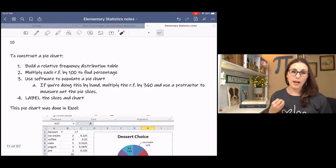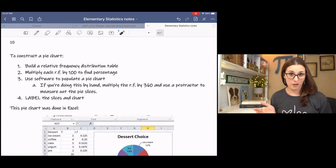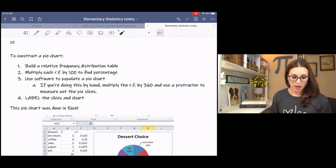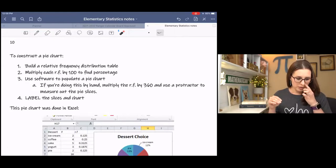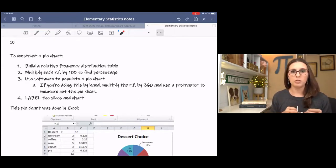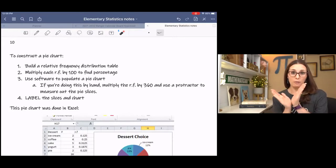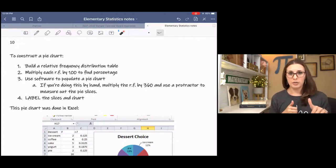To construct a pie chart by hand, it is a little bit tedious. It can be done and it's actually kind of fun. You build your relative frequency distribution table. You can figure out your percentages of each observation so that you can label your pie chart. And then what you would do, if I'm talking about by hand, basically what you would do is you would take your relative frequency, multiply it by 360 degrees to figure out the angle of the pie piece.